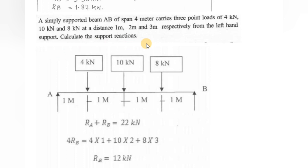Next problem: Calculate the support reactions of a simply supported beam with three point loads. The span is 4 meters with point loads of 4 kN, 10 kN, and 8 kN at distances of 1 m, 2 m, and 3 m from the left support respectively.